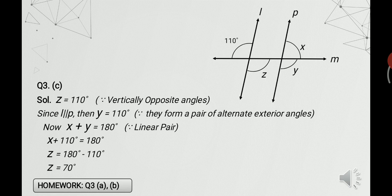Question number 3, part c. We have to find the angles represented by x, y and z. Starting with z: from the figure, z and 110 degrees form a pair of vertically opposite angles, so z equals 110 degrees. For y: line L is parallel to line P with transversal M, and y and 110 degrees form a pair of alternate exterior angles, so y equals 110 degrees. Alternatively, y and z form a pair of corresponding angles, and since z equals 110, y also equals 110. Both methods give the same result.